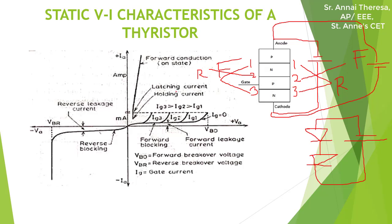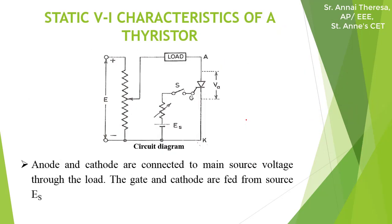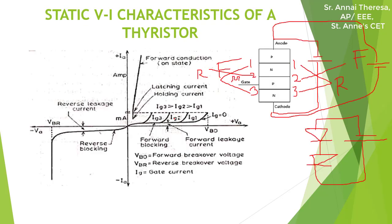The third mode is forward conduction mode. Here, the anode is connected to the positive terminal, cathode to the negative terminal, and the gate signal is also given. There will be current flow.